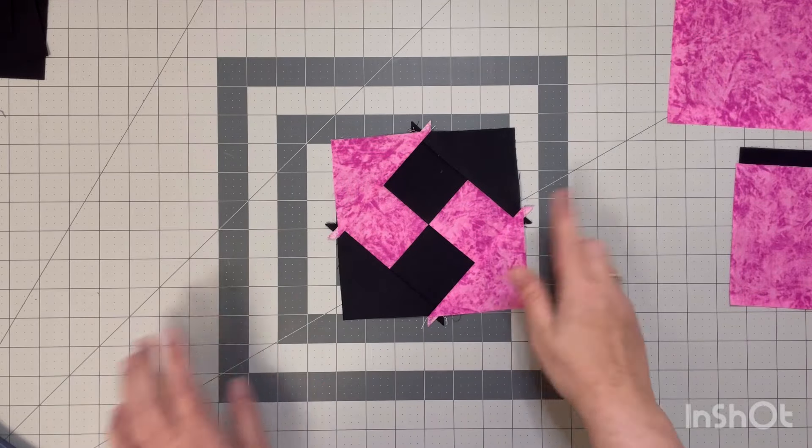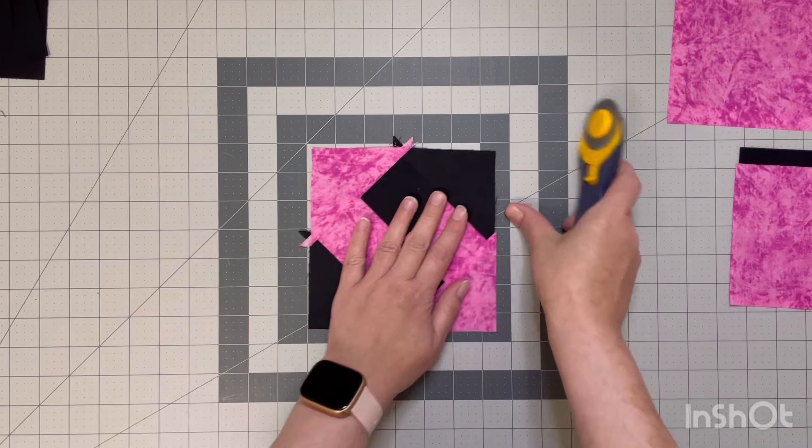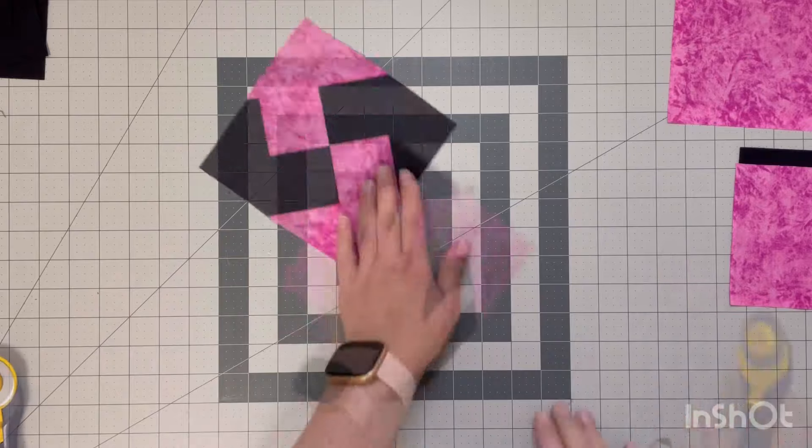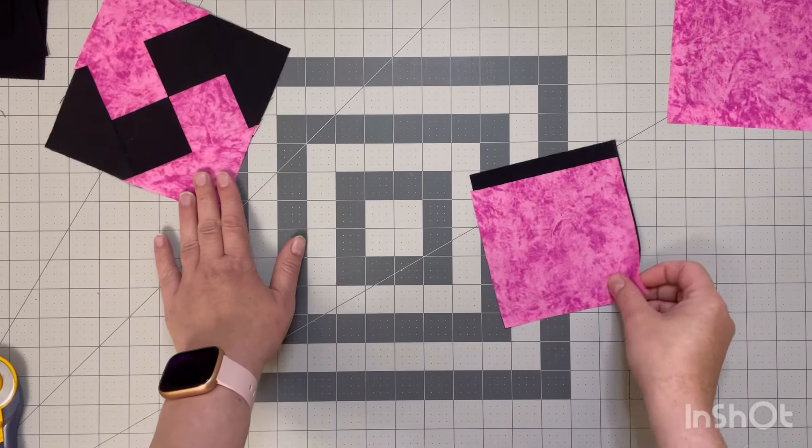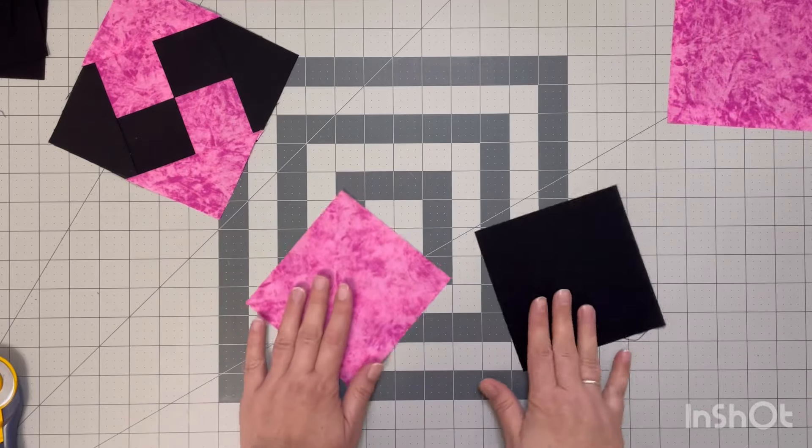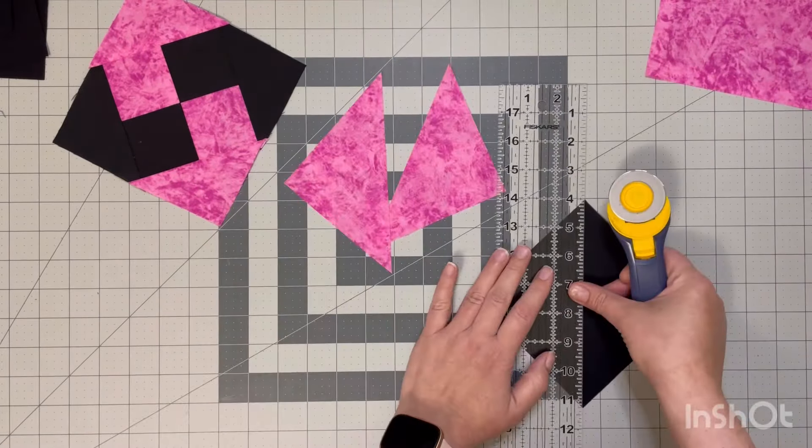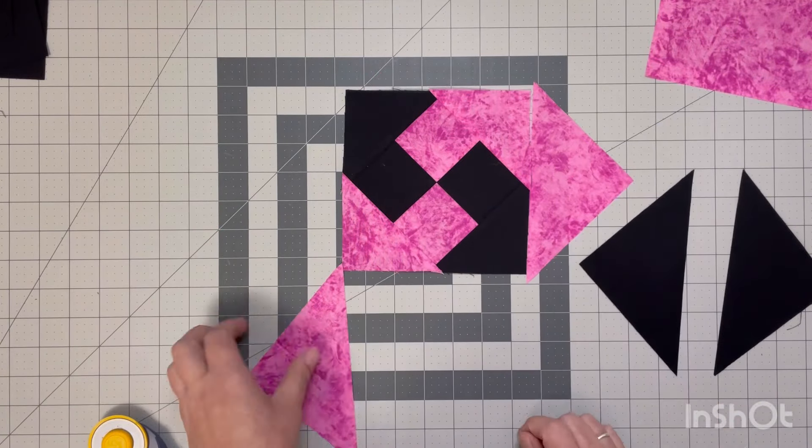This is what your block should look like at this point. You can see those little dog ears there. I'm just going to take my rotary cutter and give that a trim. You could use your scissors here if you wanted to, that's entirely up to you. Now we're going to do the exact same thing with our next round. We're going to take the squares that are measuring 5 and 1/8 inches and cut those on the diagonal as well. We are literally going to be repeating round one.